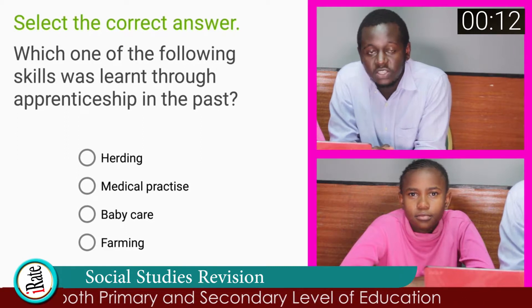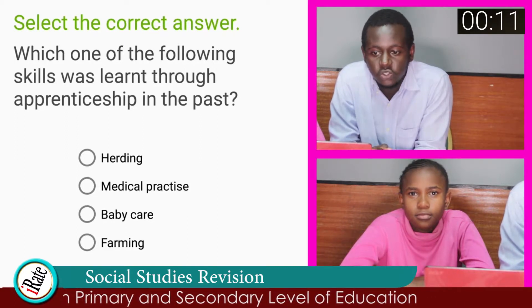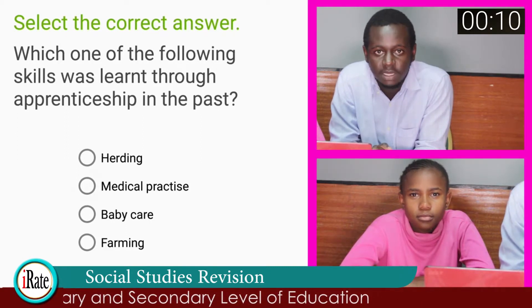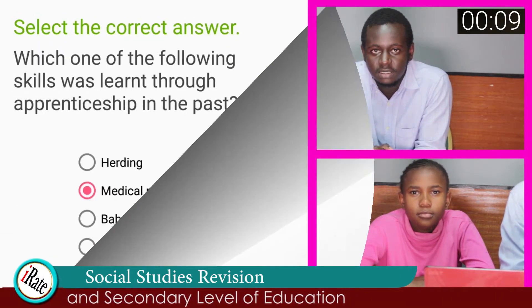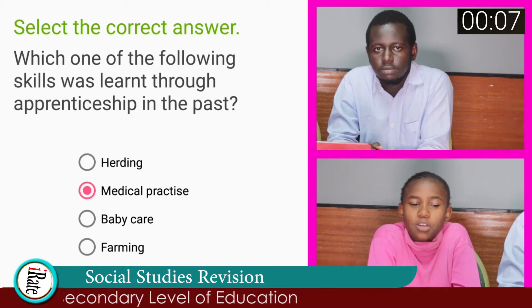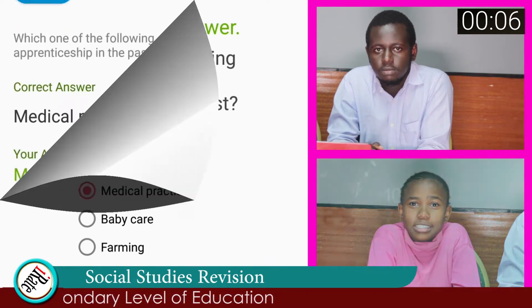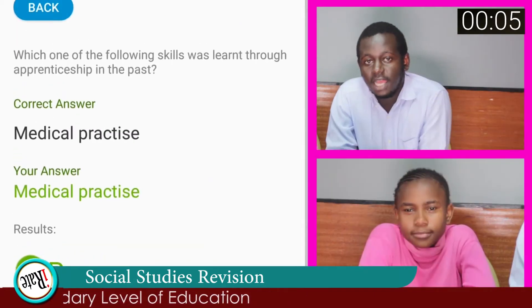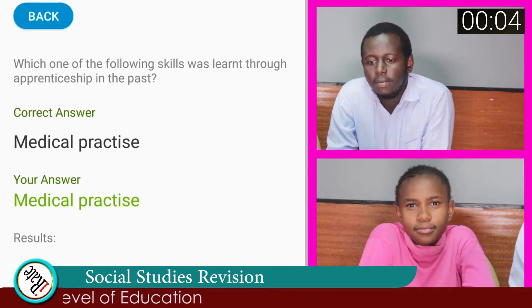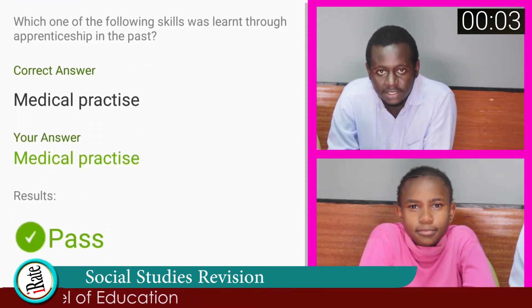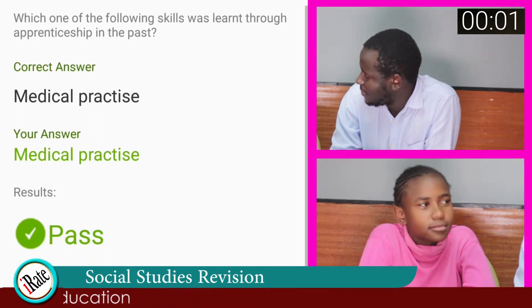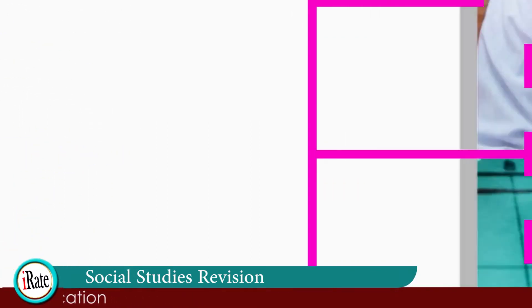Question number ten: Which one of the following skills was learned through apprenticeship in the past? The correct answer is medical practice. The student is correct. Well done. Thank you for being with us throughout the tutorial. We believe that you have learned something. See you in our next tutorial.